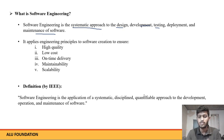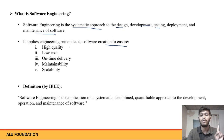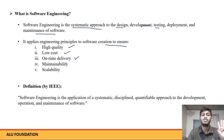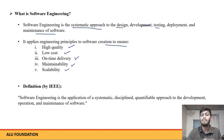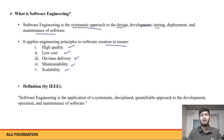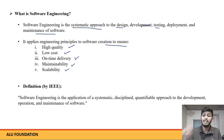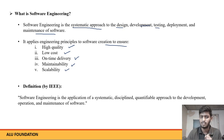In software engineering, engineering principles are applied. We need high quality, we need to maintain timelines, and we need scalability. Scalability means multiple users can use the application. For example, when you check 10th class results online, if the site doesn't load for many people at once, it's not scalable. Scalable means if a thousand people click at the same time, everyone should be able to open it on their mobile.